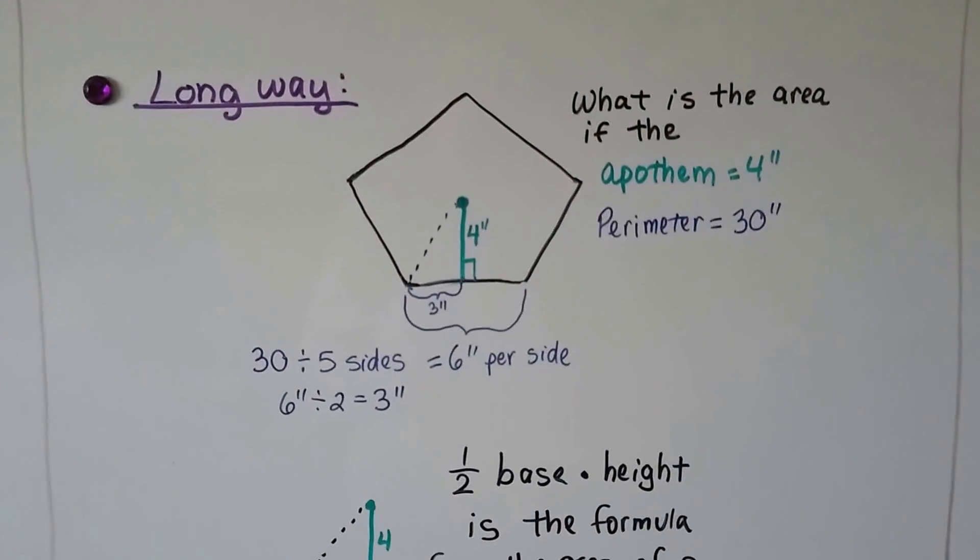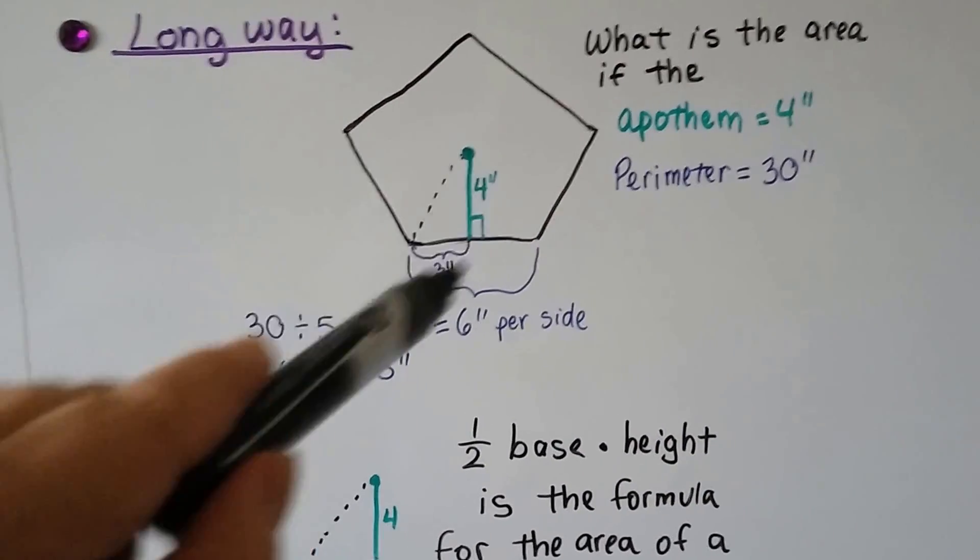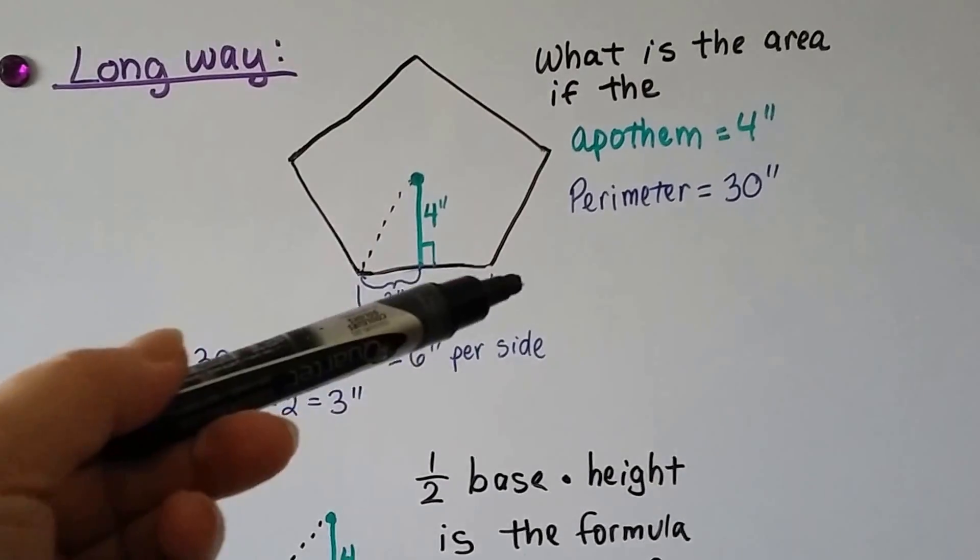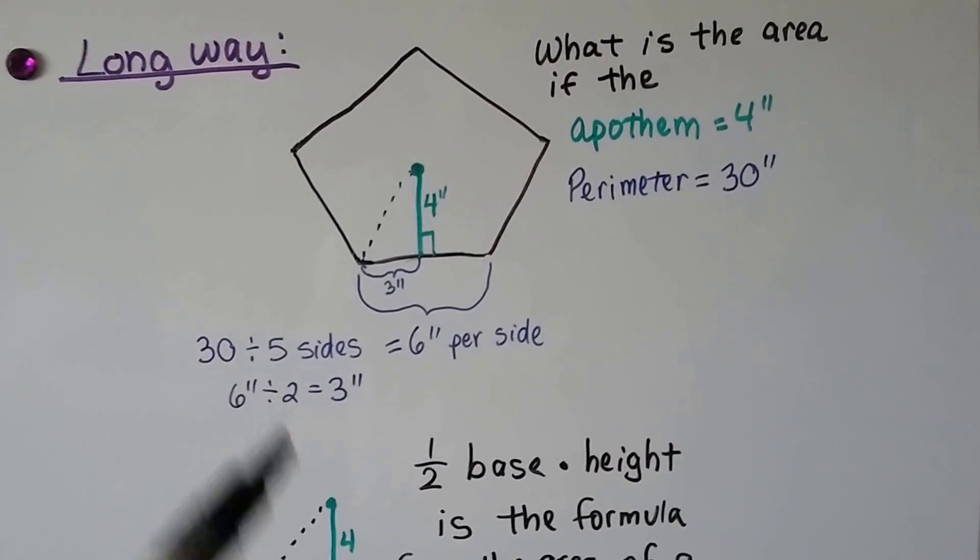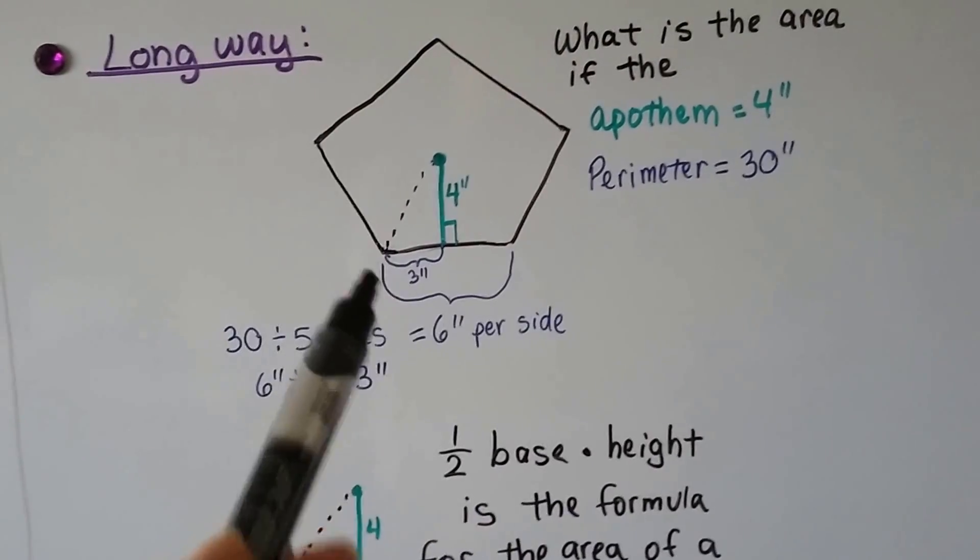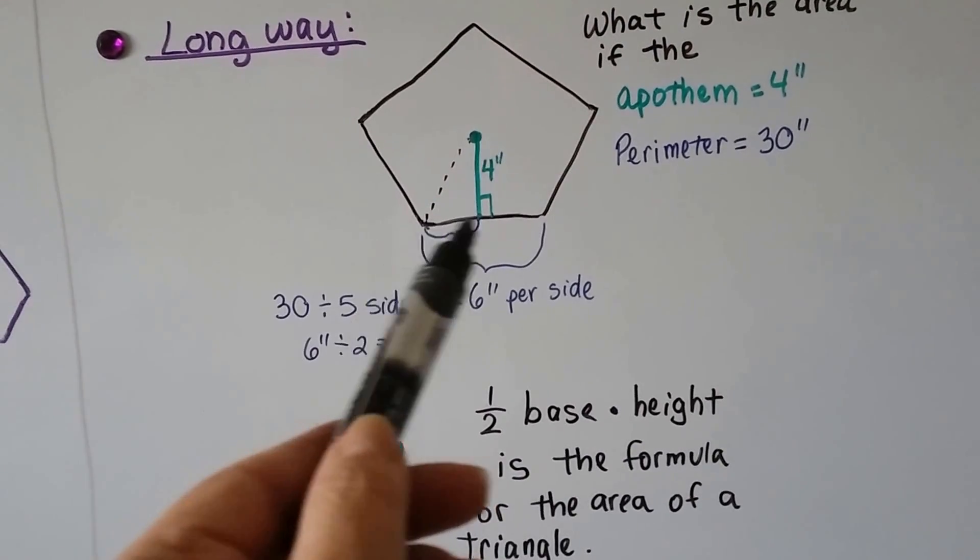So there's two ways to do this and this is the long way. If we know the apothem is four inches and we know that the perimeter is 30, well, there's five sides in a pentagon, so we would divide that 30 by the five sides. That means one side is six inches and if one side is six inches, that means this little piece here is three inches.